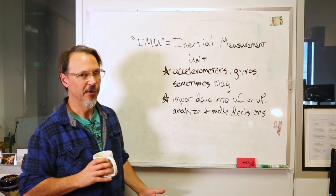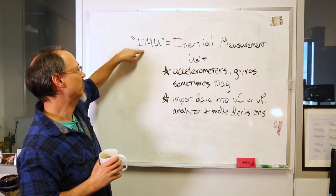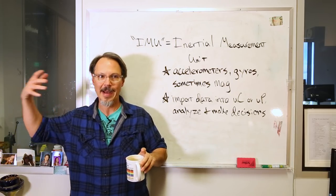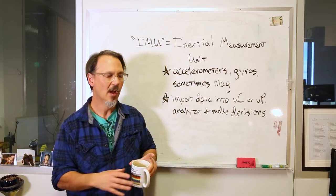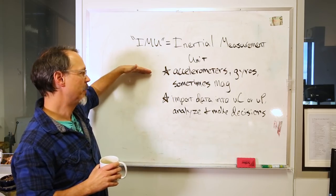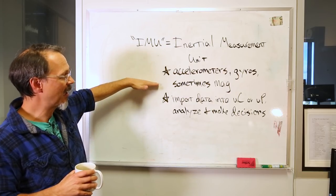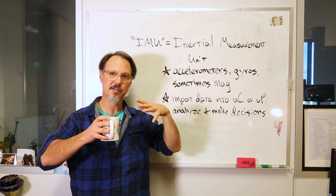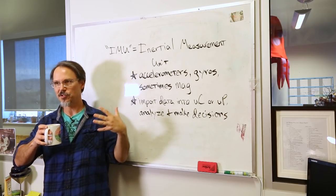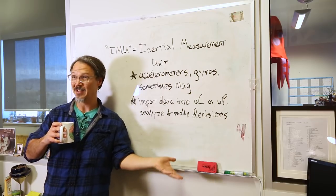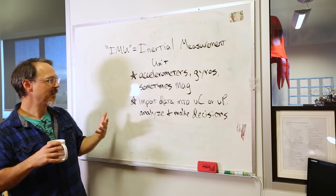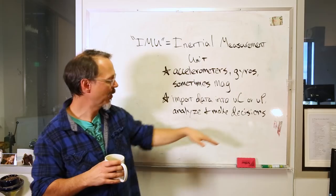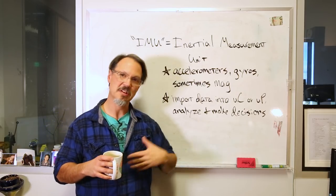So let's all get on the same page first. IMU stands for Inertial Measurement Unit. And what it's for is for tracking physical forces that are acting on a thing in the real world. It's made up of sensors: accelerometers, gyros, and sometimes magnetic sensing as well. You'll have like a triple axis accelerometer mated with a triple axis gyro and a triple axis magnetometer sometimes. The idea is that this thing is taking data and you import that data into a microcontroller or microprocessor and you analyze it and make decisions.